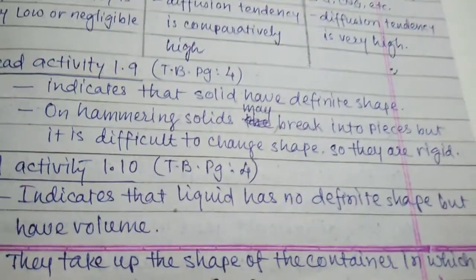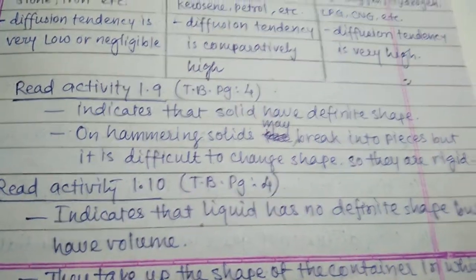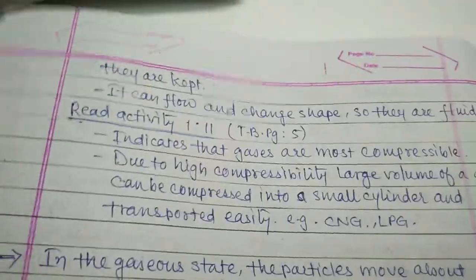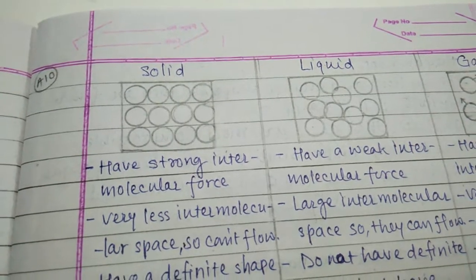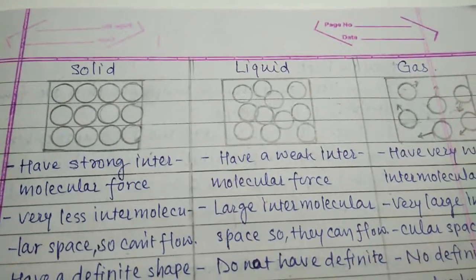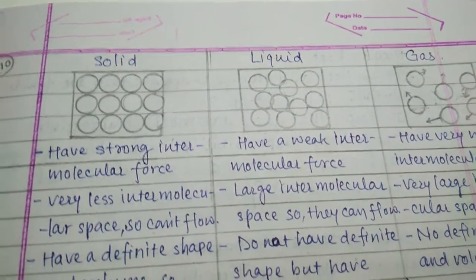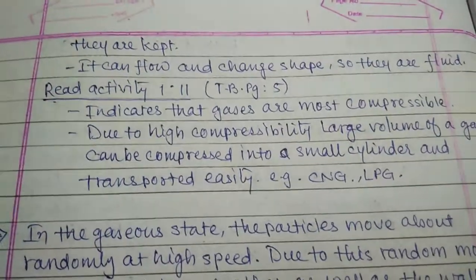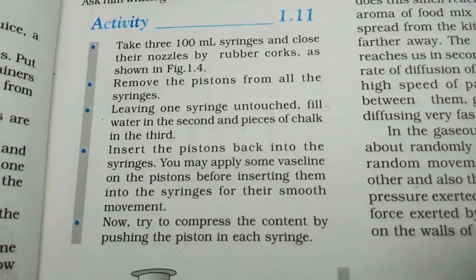Activity 1.10 discusses liquids, which indicates that liquid has no definite shape but has a definite volume. A characteristic of liquid is that it takes the shape of the container in which it is kept. This happens because in solids the molecular arrangement is very close together — intermolecular forces are very strong — but in liquids the particles are a little bit farther apart, so they have weaker intermolecular forces. Due to this arrangement, liquids are fluid and can flow.